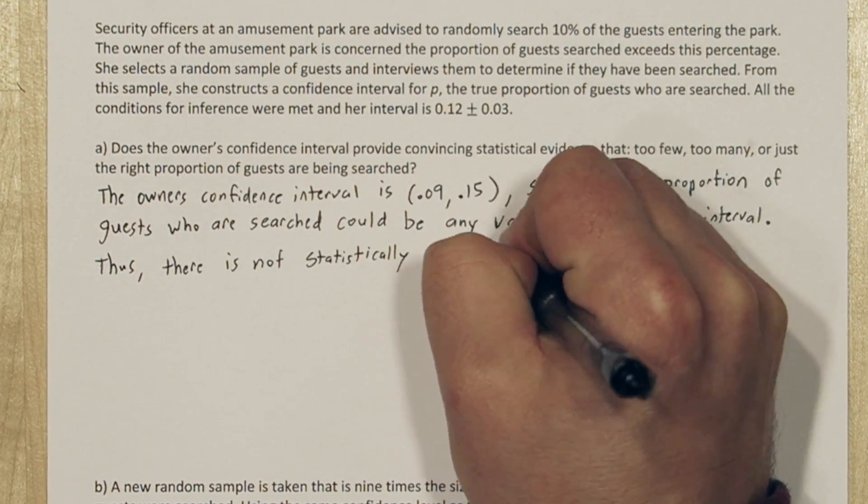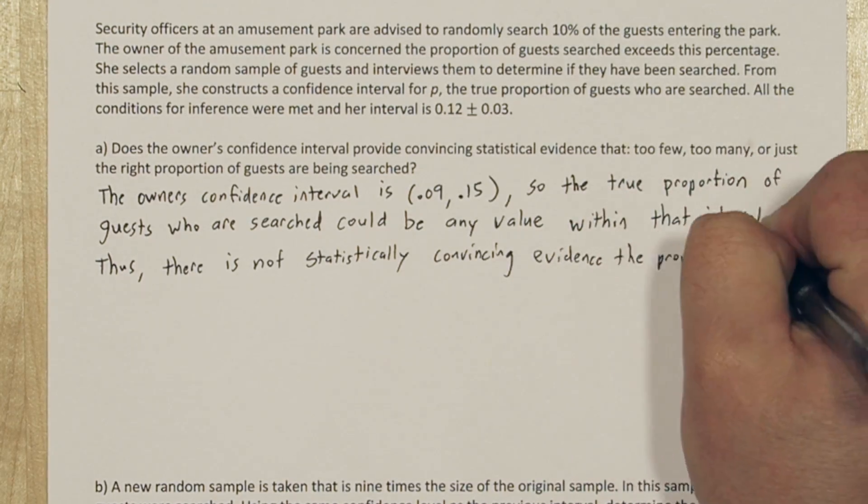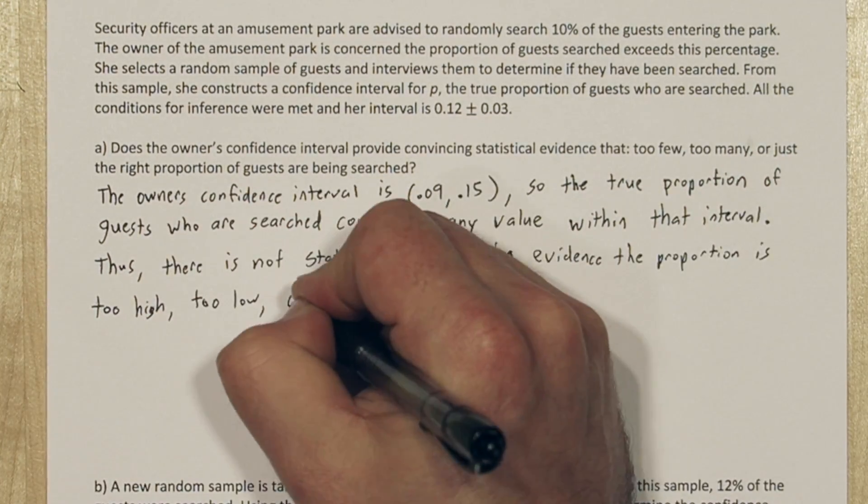Thus, there's not statistically convincing evidence that proportion is too high, too low, or just right.